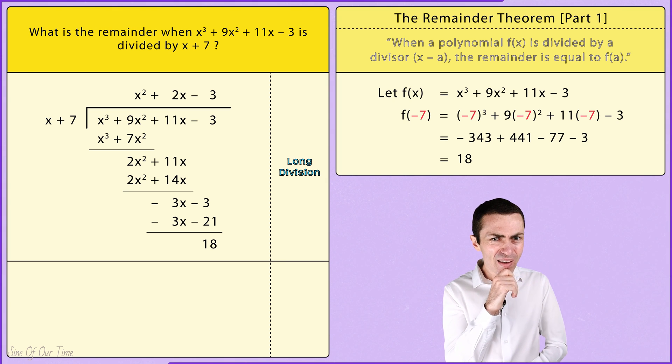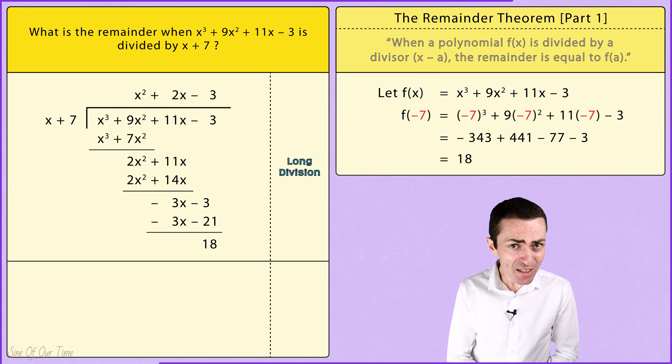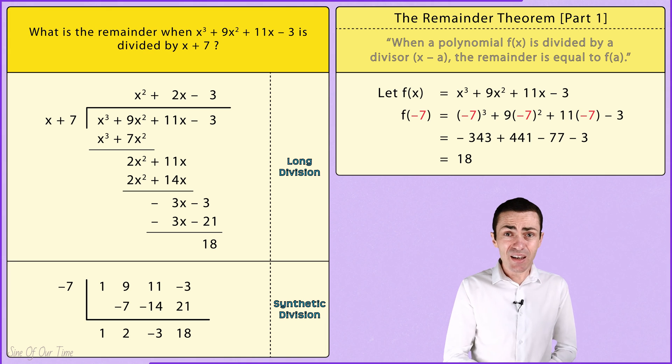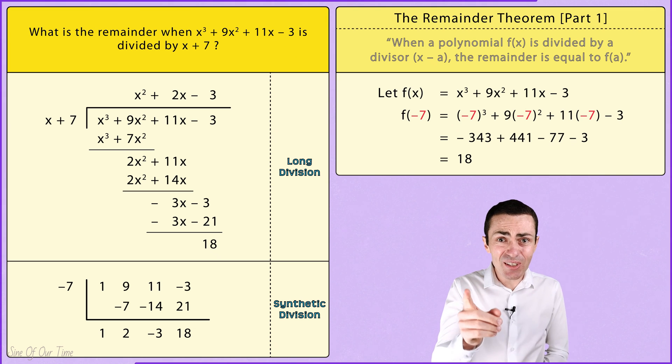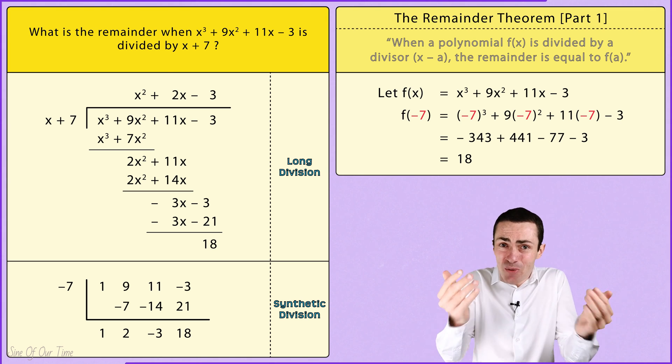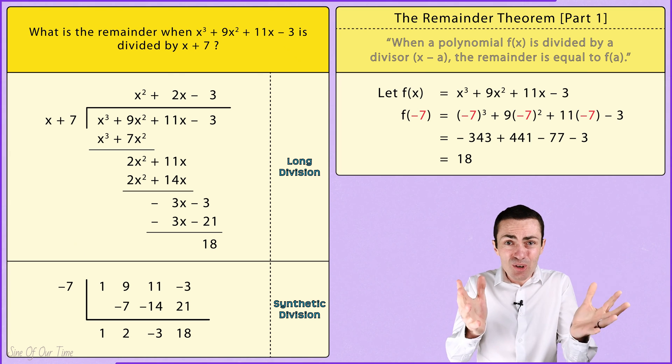Well, let's check again, but this time using synthetic division. Again, you can check this calculation for accuracy, but it's telling us that the remainder is still 18. Well, I guess that means that the remainder theorem actually works, but it seems too good to be true.